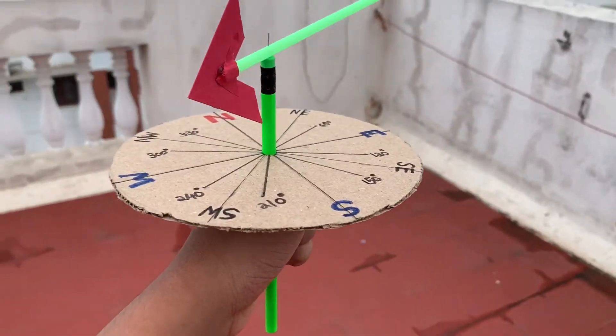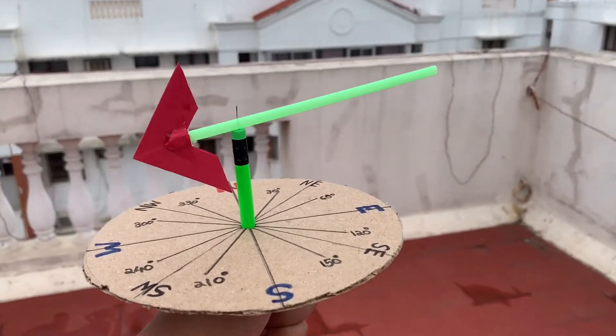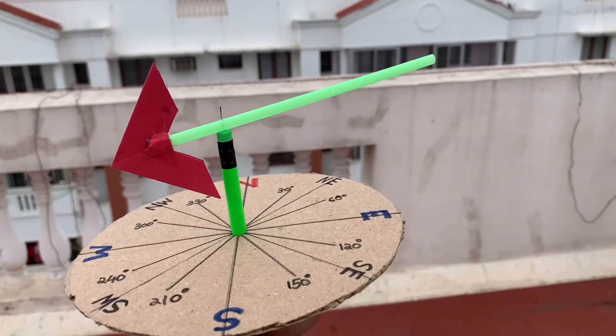As you can see from our wind vane, we know that the wind is flowing from the northeast to the southwest. This is most probably the sea breeze as I live in a coastal area.